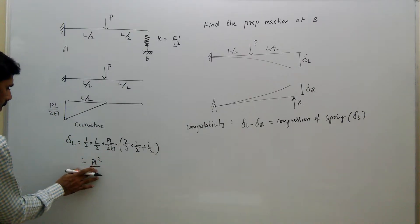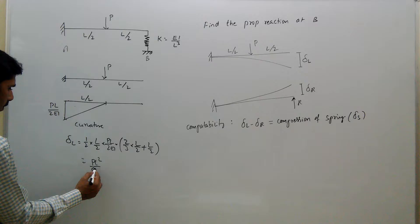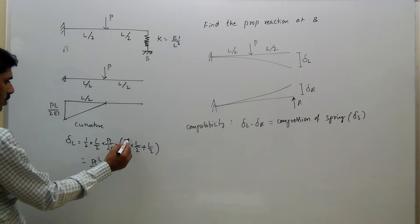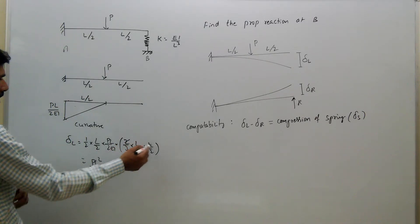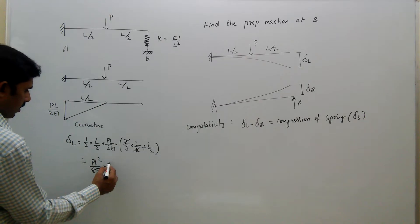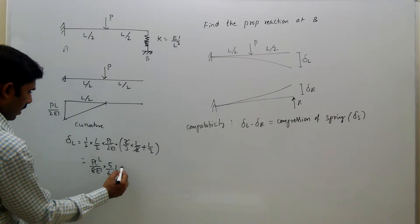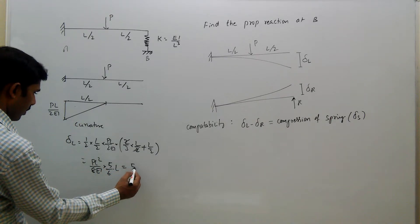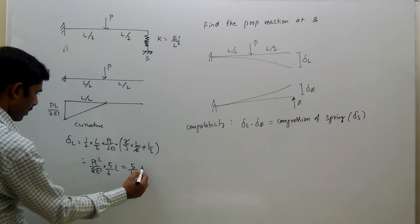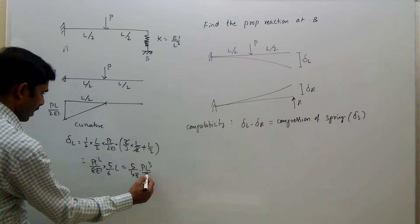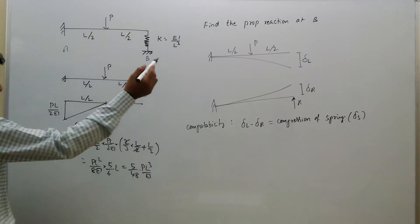Continuing the calculation: delta L equals (P·L²)/(2·2·2·EI) times (L/3 + L/2), which gives 5/6 · L. Therefore delta L equals 5/48 · (L³/EI).